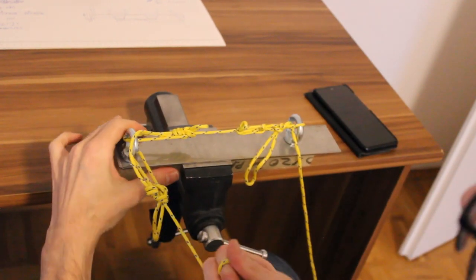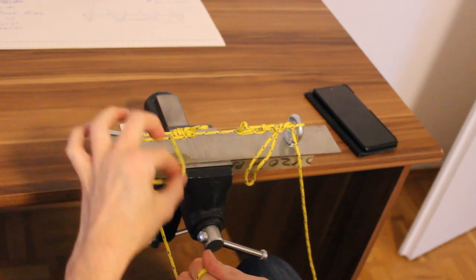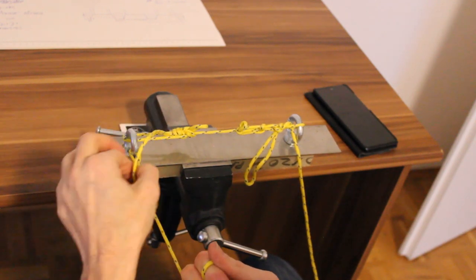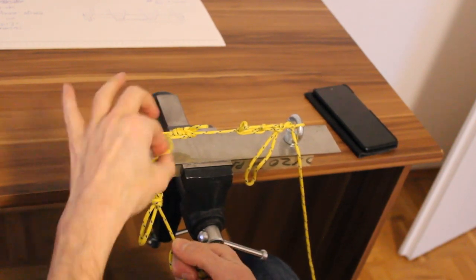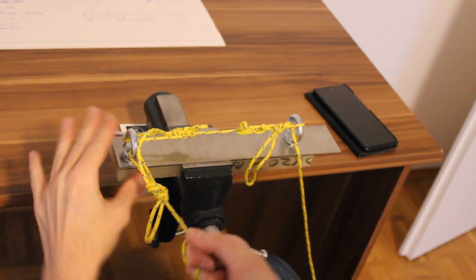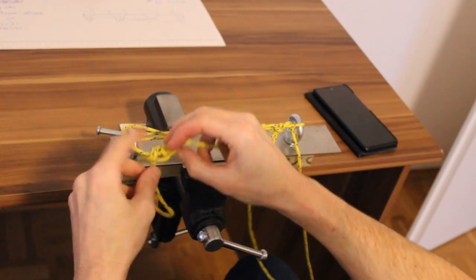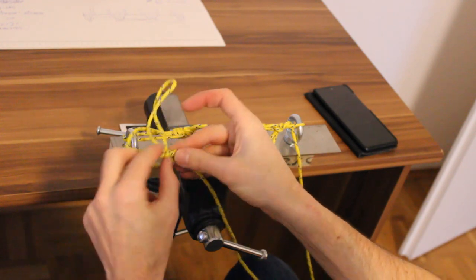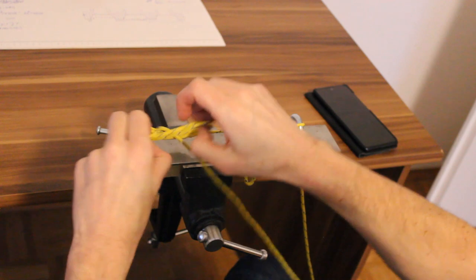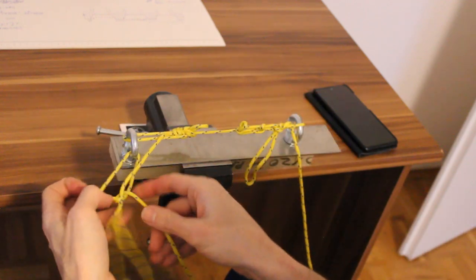There you go. And now you can pull on this one completely independently, because these two knots aren't connected to each other directly. There's just a loop, a slack loop over here. Now, the nice thing about a bowline with a Yosemite finish is it's really easy to undo, even if it's been really tightened down.